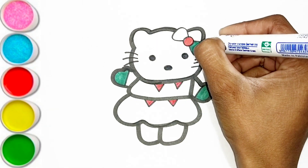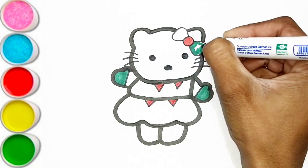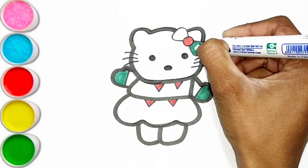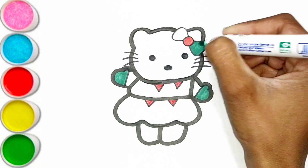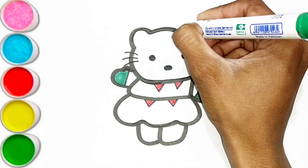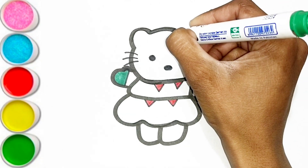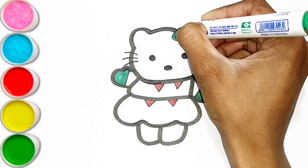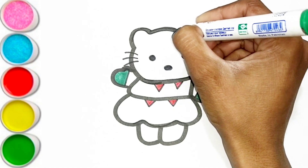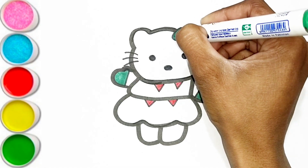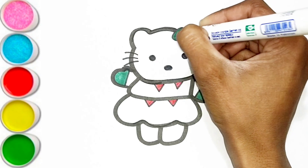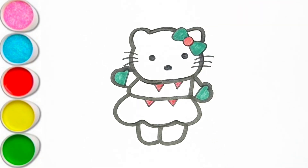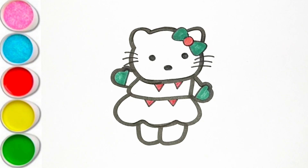Q is for Queen, Q-Q-Queen. R is for Rabbit, R-R-R-Rabbit. S is for Sun, S-S-Sun. T is for Toad, T-T-Toad.